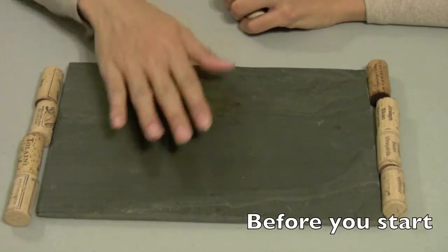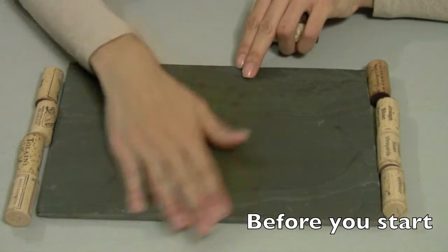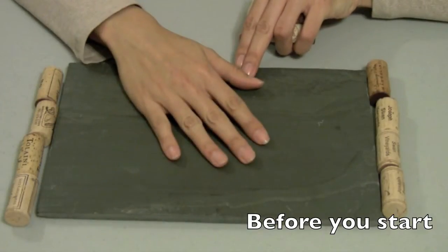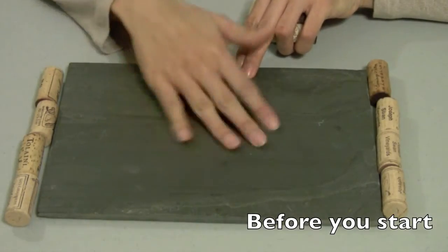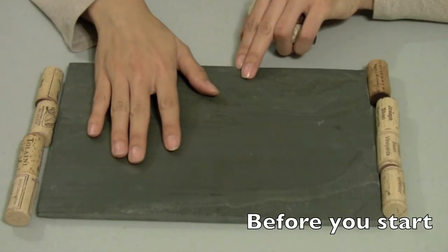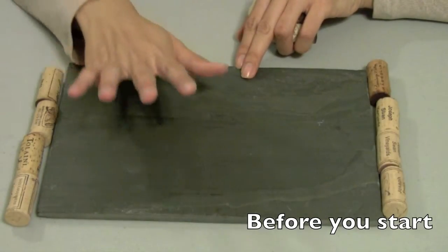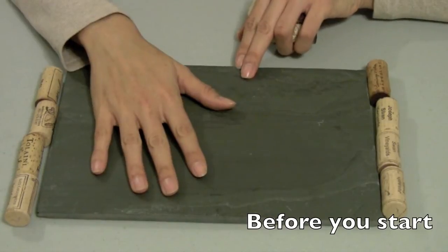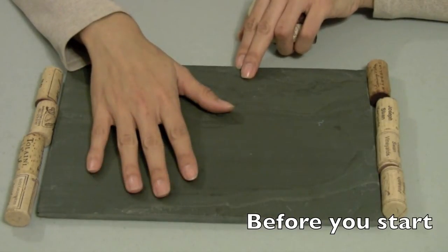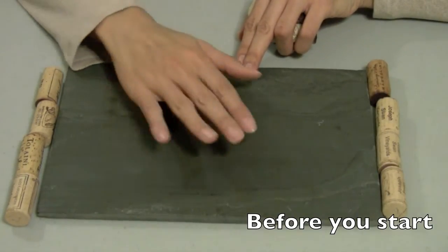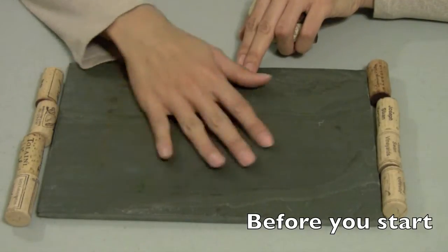Before I started this project, since I purchased this slate tile from my local flooring store, it was a bit dusty when I purchased it. So before I started this whole project, I washed it with warm water and regular dishwashing soap. I did wash the tile gently by hand and let it dry overnight.